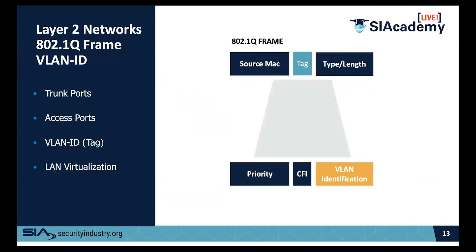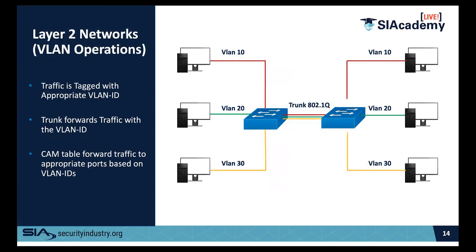Once you segment the network, each VLAN gets its own network segment or tag. A common question is: what's an access port versus a trunk port? The next slide shows exactly that. With three VLANs — VLAN 10, 20, and 30 — each device connects to an access port belonging to its specific VLAN.